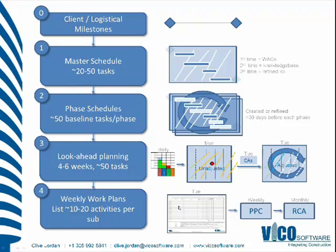The weekly work plans show the tasks for the week being defined and the assignments — the much more granular activities required to complete each task. Each item in the list might be something like 'clear area,' 'check RFI answer,' 'collect materials,' or 'prefab a cage.' All of these items are far more detailed than what we would have in the phase schedule and look-ahead adjustments.